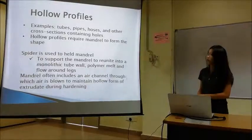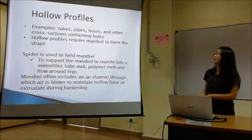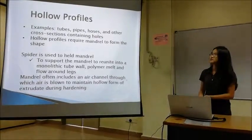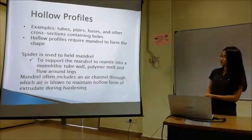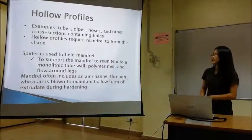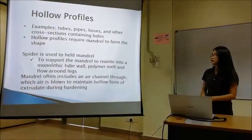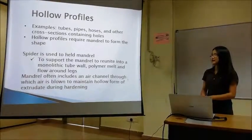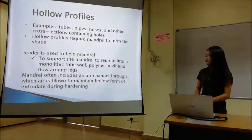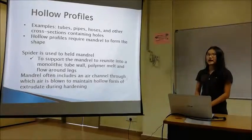For the hollow profile, it is normally used as tubes, pipes, closed sections, and other shapes which contain holes. For hollow parts, a spider is normally used to help the mandrel. The mandrel is supported in a monolithic tube wall, with polymer melt flowing around the legs. The module often includes an air channel through which air is blown to maintain the hollow form of the extrudate during hardening.